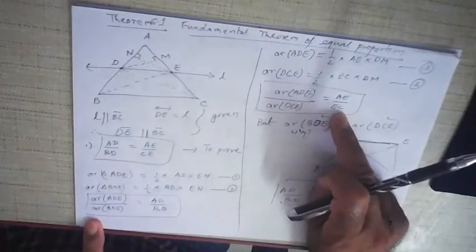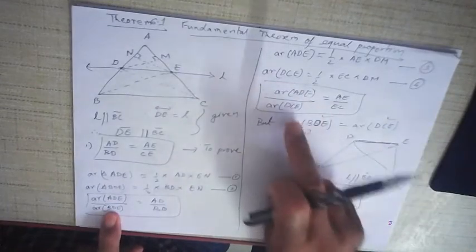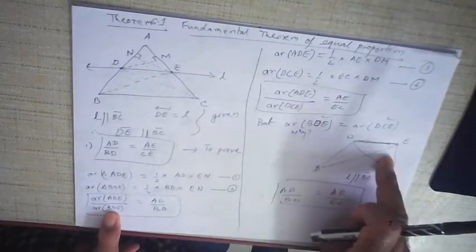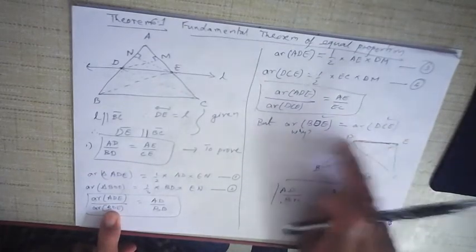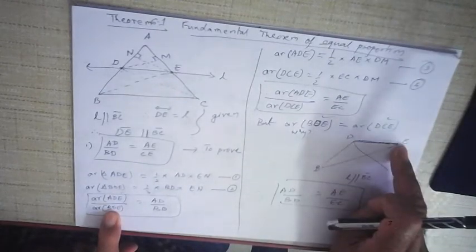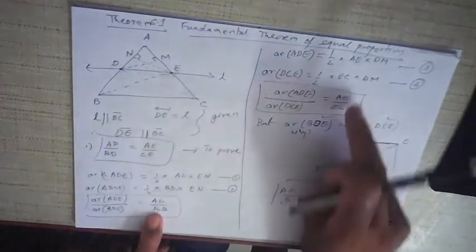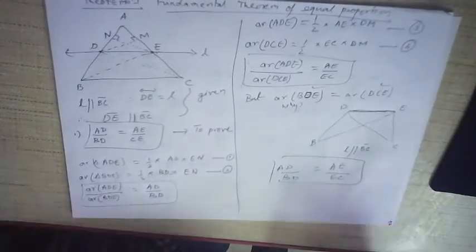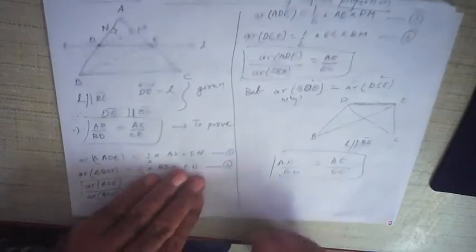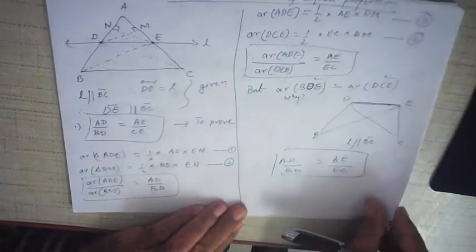Comparing both ratios: the area of triangle ADE is equal in both. Areas of triangles BDE and DCE are equal because they are lying between the same pair of parallel lines and on the same base DE. Their areas are equal, and therefore AD/BD = AE/EC. This is the Fundamental Theorem of Equal Proportion.